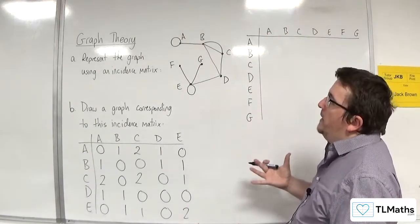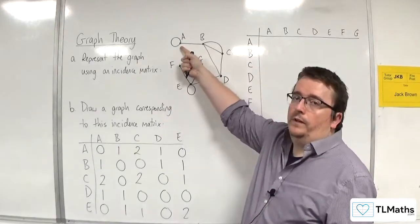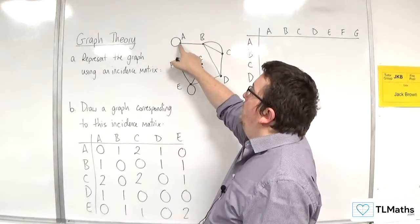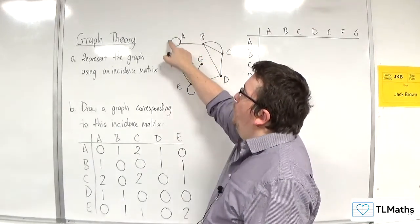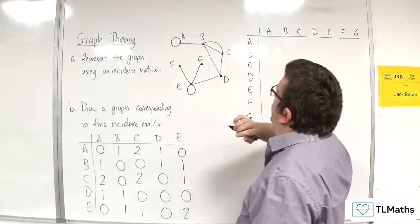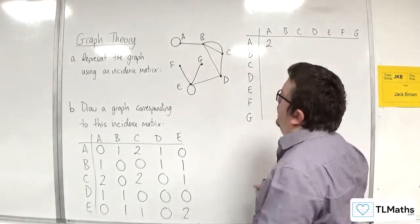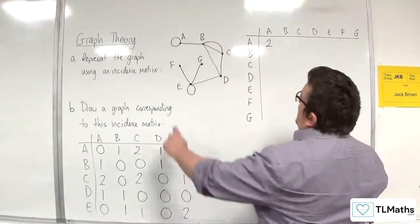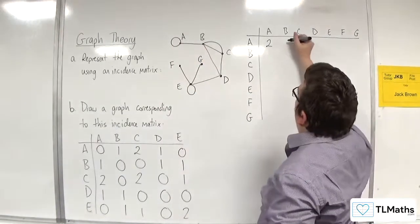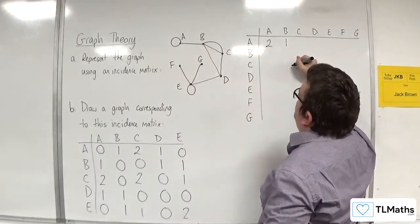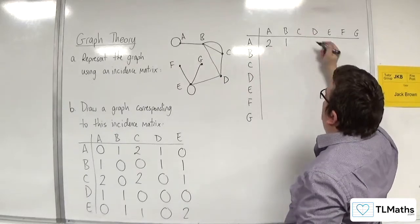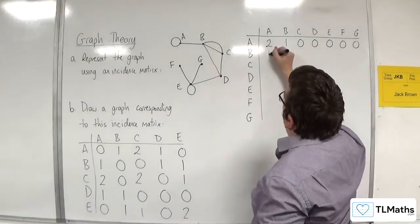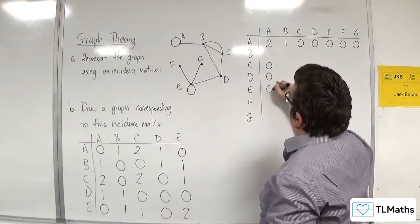Let's look at A. A is connected to itself via that loop. There's actually one way it's connected going out and another way back, so for any loop we write two - there are two connections there. A is connected to B by one edge, but A is not directly connected to any of the other vertices, so we'll put zeros for the rest: 1, 0, 0, 0, 0, 0.